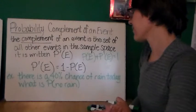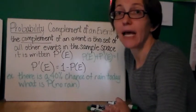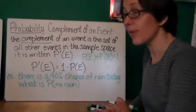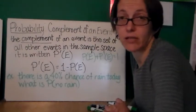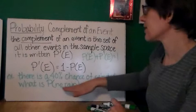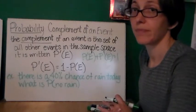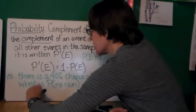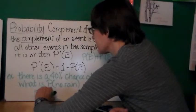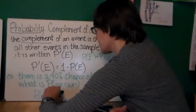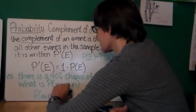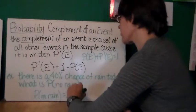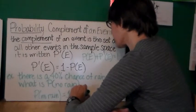Here's an example. There is a 40% chance of rain today. What is the probability that there's no rain? Well, either it rains or it doesn't rain. So it's clear that this is the complement of the event. So to find P(no rain), I'm just going to do one minus 40% is 0.4.